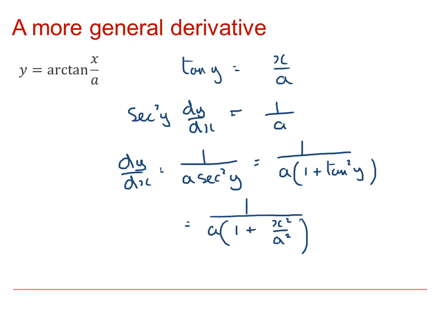We can then multiply both the top and the bottom line by a to give a over a squared multiplied by 1 plus x squared over a squared. And multiplying the bottom out, we get therefore this is equal to a over a squared plus x squared. So we've found that the derivative of Arctanx over a is a over a squared plus x squared.